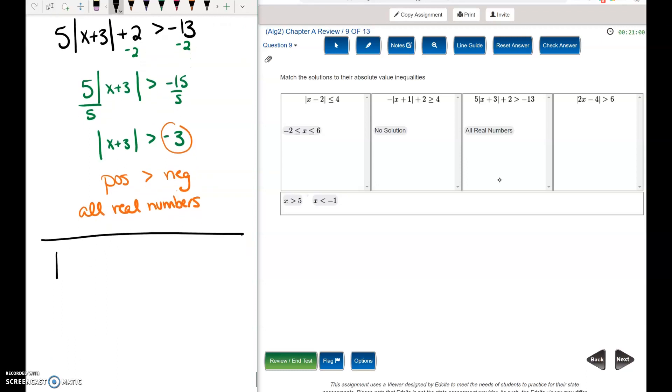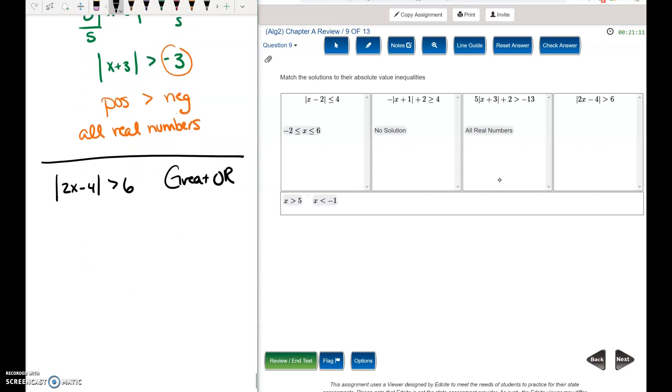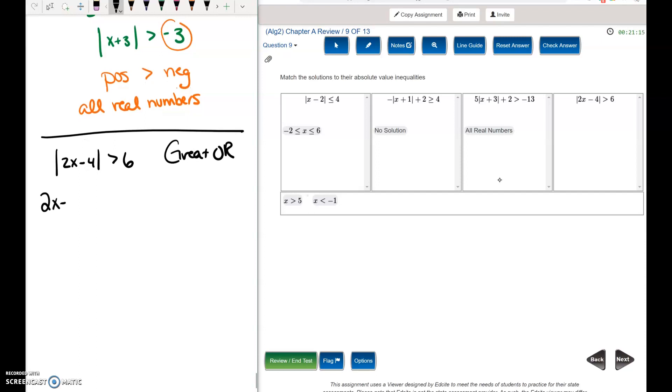Okay, the last one in this table is absolute value of 2x minus 4 is greater than 6. This is a great or problem. In a great or problem, one of our inequalities, we switch the symbol and take the opposite of the left side. The other one, we leave it exactly as it was originally. We solve both of them. So add 4, divide by 2, add 4, divide by 2.